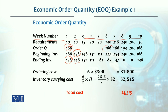One more thing to keep in mind: for example, in week 6 we are meeting requirements on the basis of 166. Similarly, in week 7, although the quantity required was 216, our ending inventory was 87. So a 166-unit order was placed, giving us total inventory of 253, from which 216 were consumed.